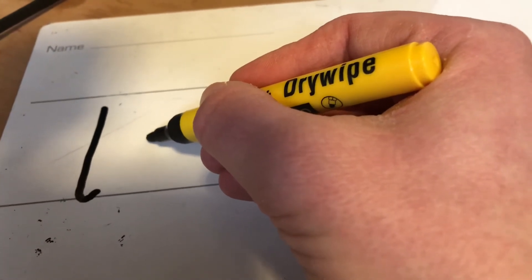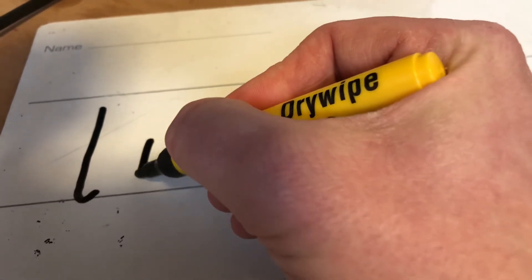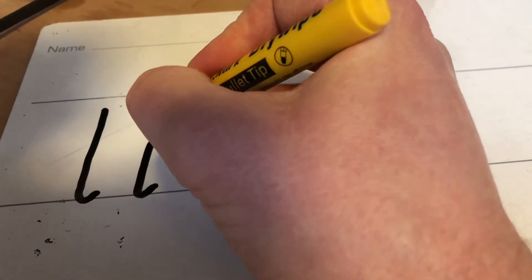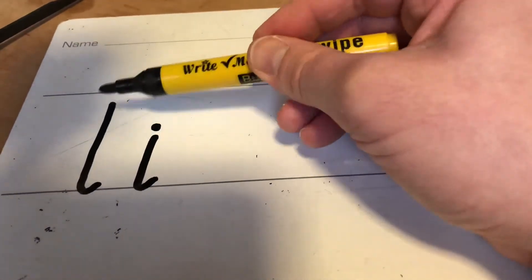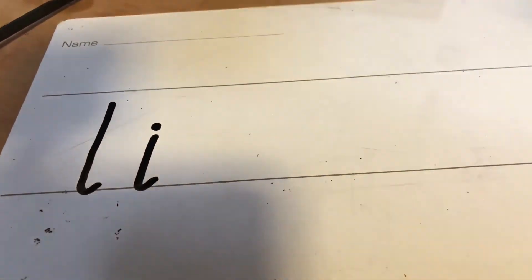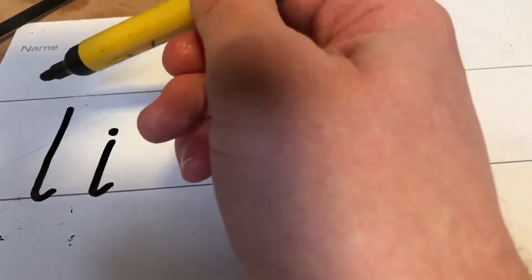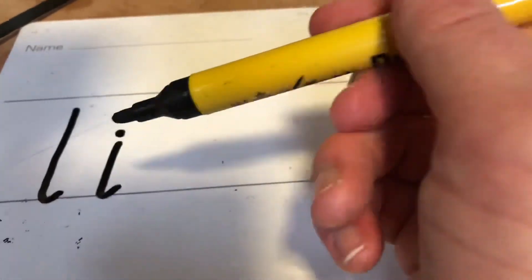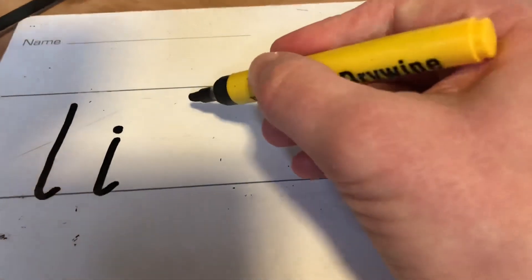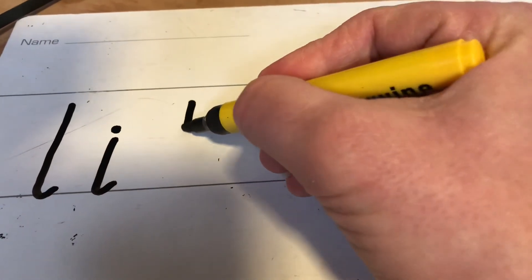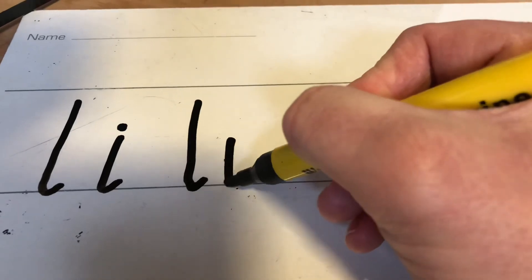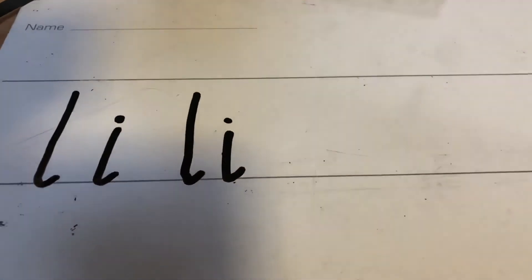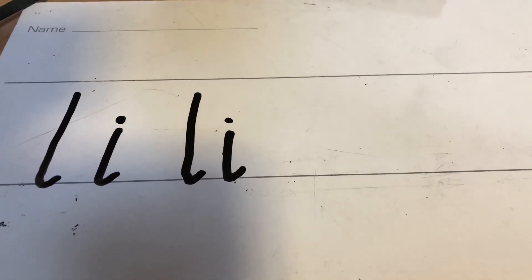So I'm going to start at the top, come all the way down and flick. Take my pen off and then do the dot. Can you see the difference? So that's nice and tall and taller than that one. But they both start at the top, come all the way down and flick. So I'm just going to have a little practice at doing some of these so I can get the height. Have a go at that and I'll see you later.